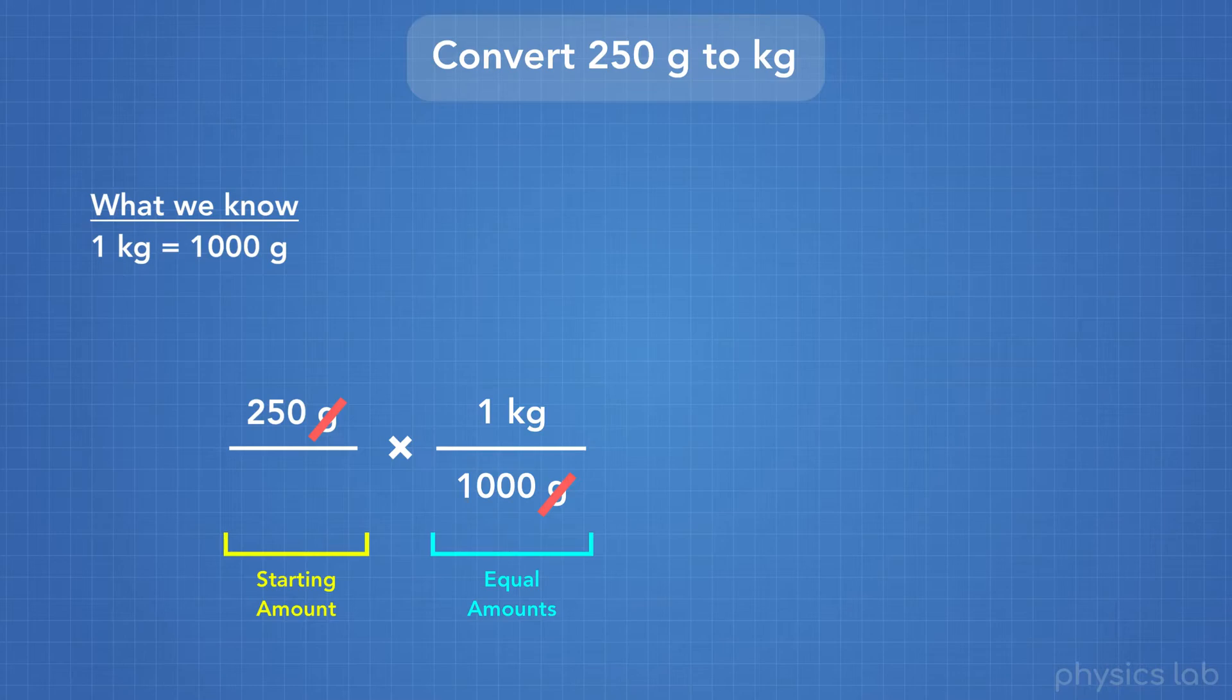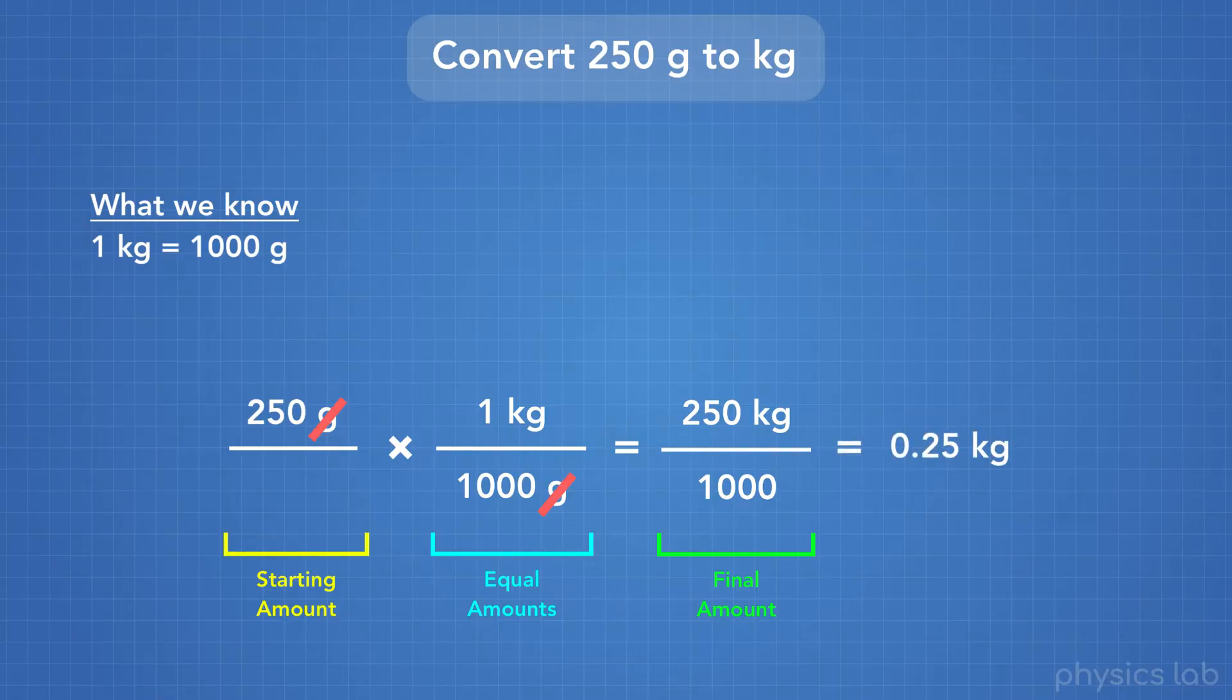Next, we multiply 250 times 1 kilogram to get 250 kilograms. And we only have 1,000 with no units on the bottom. 250 divided by 1,000 equals 0.25. So, 250 grams equals 0.25 kilograms.